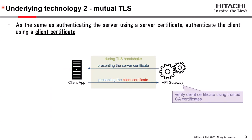Next, mutual TLS. As with authenticating the server using a server certificate, mutual TLS also authenticates the client using a client certificate. During a TLS handshake, the API gateway presents its server certificate and the client application presents its client certificate. The API gateway verifies the client certificate using trusted CA certificates. This is mutual TLS.